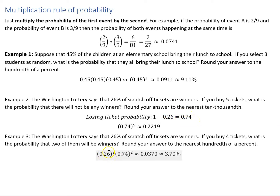I've got two times that I'm going to get a winner, so 0.26 to the second power, and two times that I'm going to have a loser or not winner, 0.74 to the second power. And if I multiply that out, I get 0.0370.